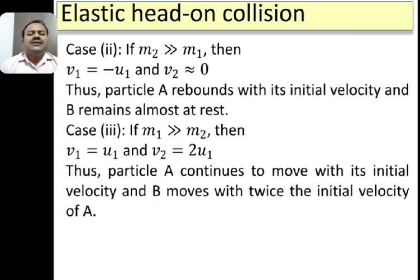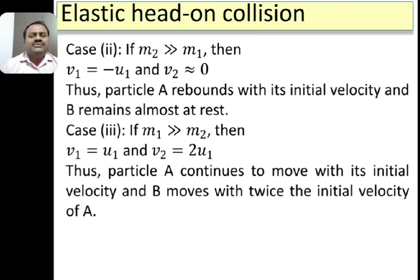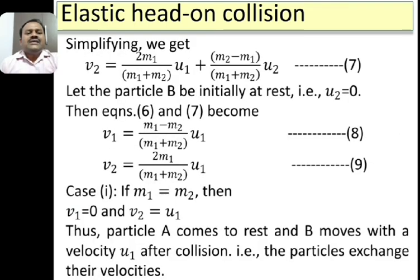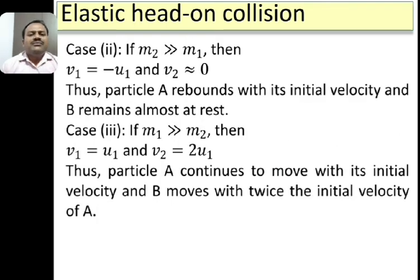Similarly, considering M2 very large compared to M1 — that is, the target particle at rest is very massive compared to the moving particle. Using this condition in equations 8 and 9 we get V1 ≈ −U1 and V2 ≈ 0. Therefore, particle A rebounds with its initial velocity whereas particle B remains almost at rest. For example, if we throw a ball against a wall, the ball rebounds with velocity whereas the wall remains stationary.